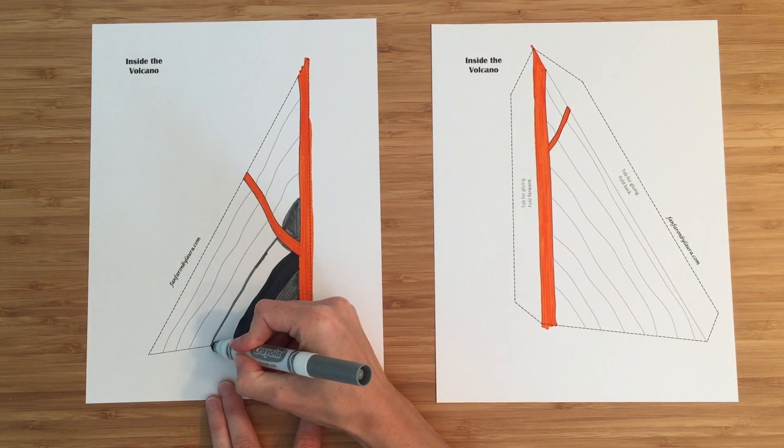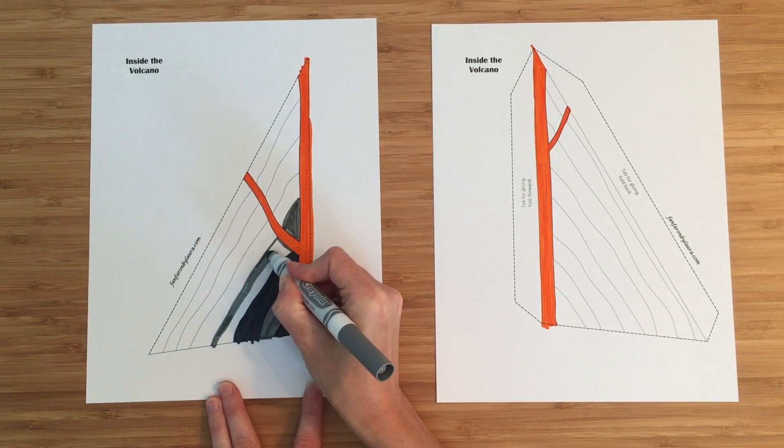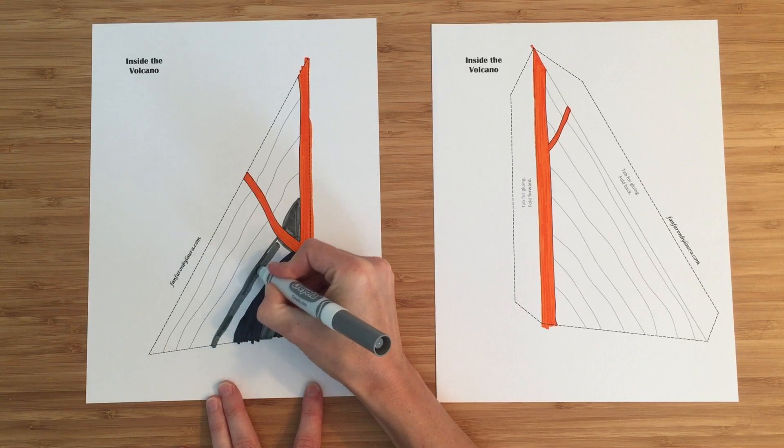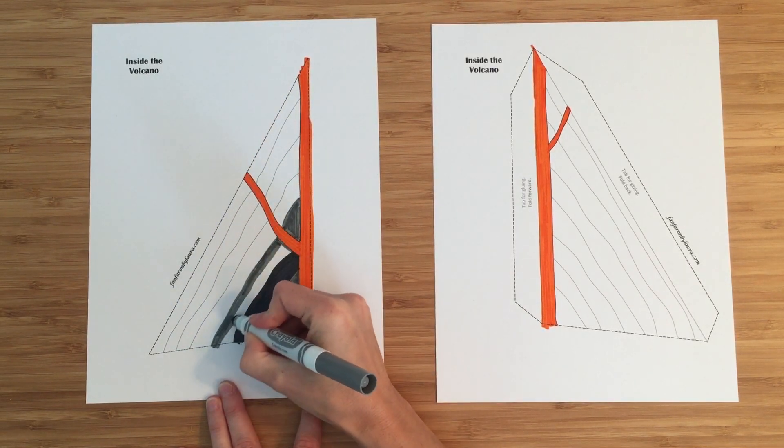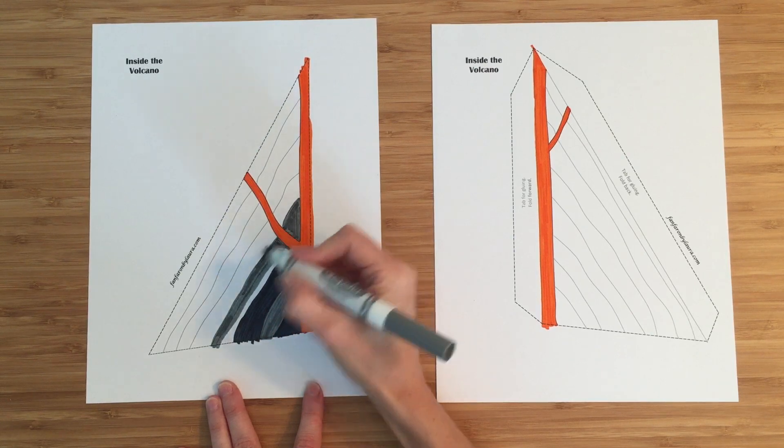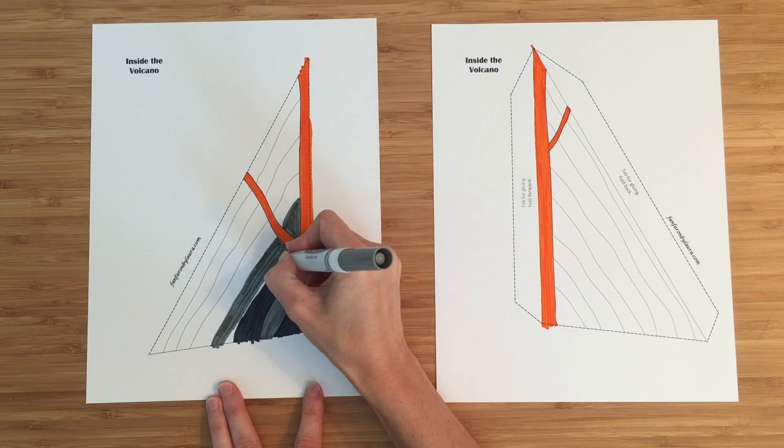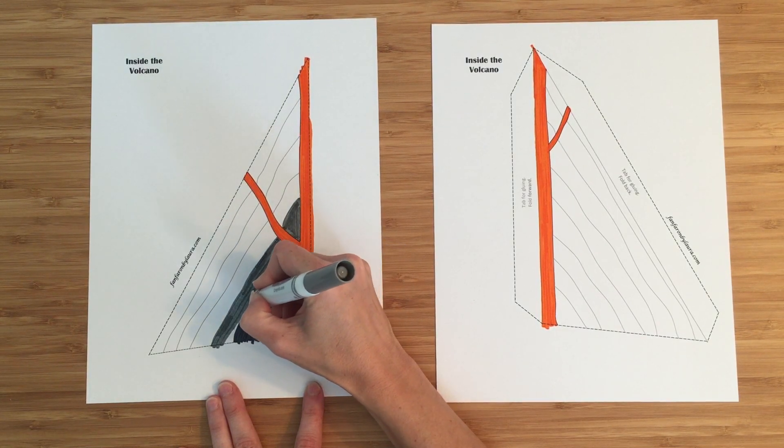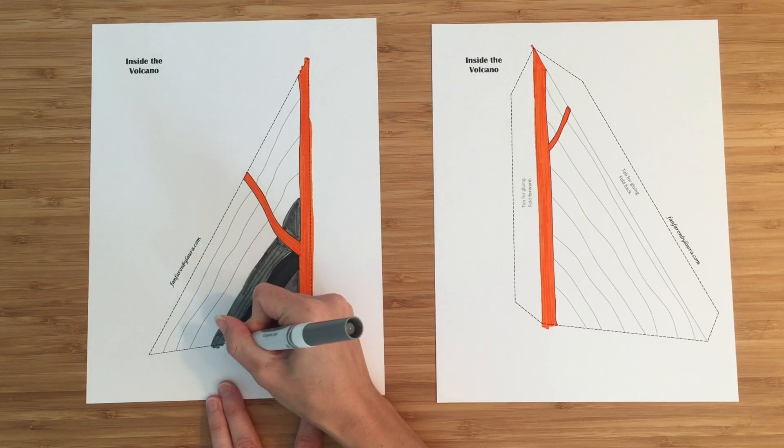This volcano is what is known as a composite volcano or a stratovolcano. And we call it that because it's a cone shape made up of layers of lava and ash from previous eruptions. So some volcanoes that are composite volcanoes that you might have heard of in the United States are Mount St. Helens or Mount Rainier. And there's a whole bunch more all over the world.